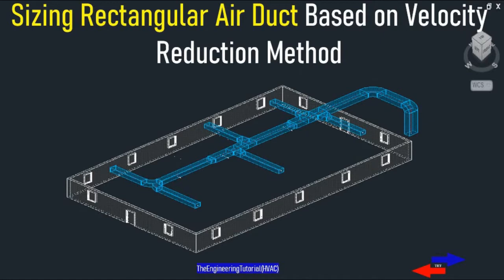In this video I will be talking about the velocity reduction method and sizing rectangular air ducts — best recommended and maximum velocities for residential systems. In the previous video I was talking about sizing round air ducts using the velocity reduction method. So in this video you will be learning to size rectangular air ducts using the same method. The velocity reduction method can be used for sizing air ducts by selecting suitable velocities, and the velocities will remain constant for the entire system, resulting in lower friction loss values.